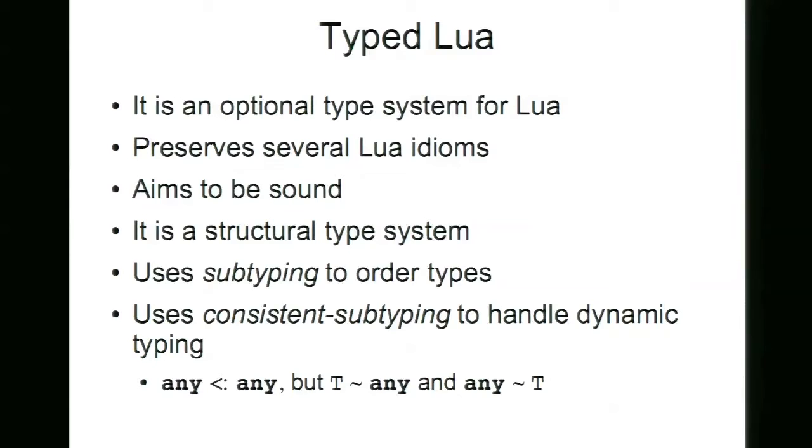It is a structural type system that uses subtyping to order types and combines the consistency relation from gradual type with subtyping to handle dynamic typing. So this means that the dynamic type is only a subtype of itself, but through consistency we can pass a static type whenever we expect a dynamic type, and we can pass a dynamic type whenever we expect a static type.